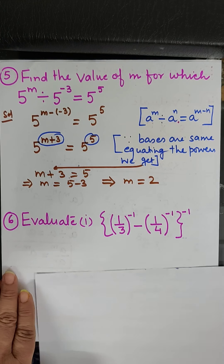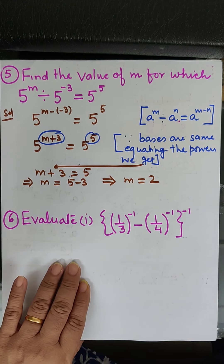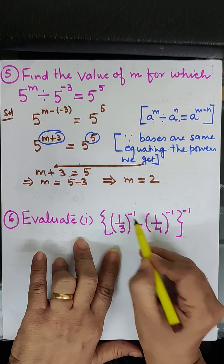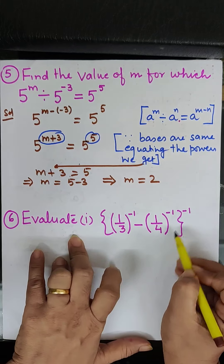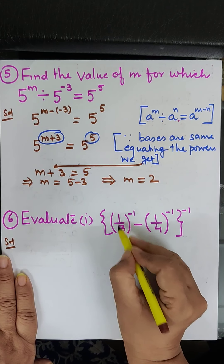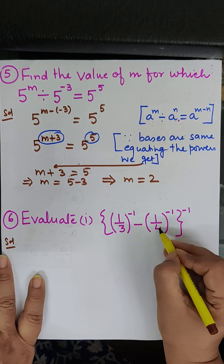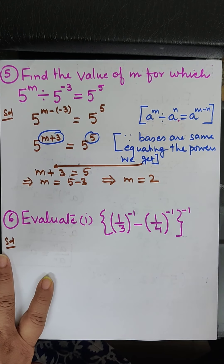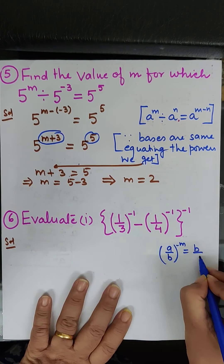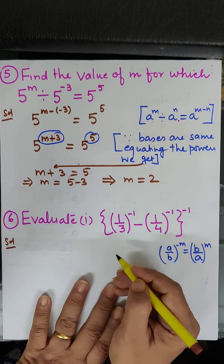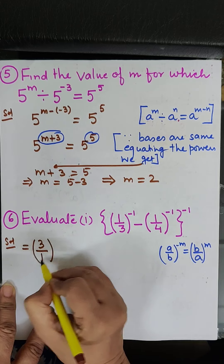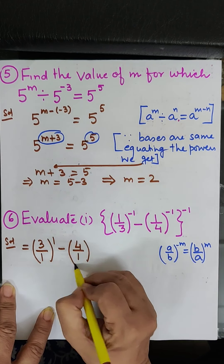Now we come to question number 6, first part: 1 upon 3 raised to the power minus 1, minus 1 upon 4 raised to the power minus 1, whole to the power minus 1. We use the law: a upon b raised to the power minus m equals b upon a raised to the power m. So 1 upon 3 raised to the power minus 1 becomes 3 upon 1 raised to the power 1, and 1 upon 4 raised to the power minus 1 becomes 4 upon 1 raised to the power 1.